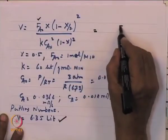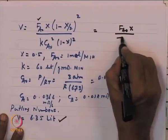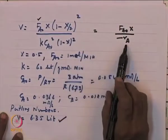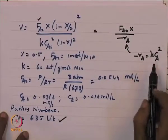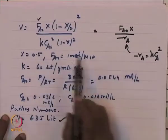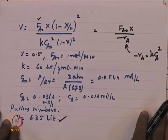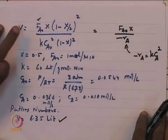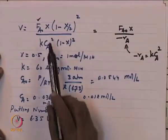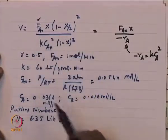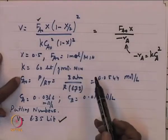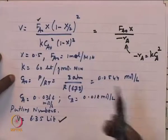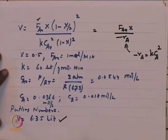We now use the design equation V = FA0·x / (−RA). Substituting −RA = K·CA² = K · [CA0(1−x)/(1 − x/2)]², with K = 60, CA0 = 0.0544, x = 0.5, and putting in all numbers, we find the volume of the equipment to be 6.35 liters.